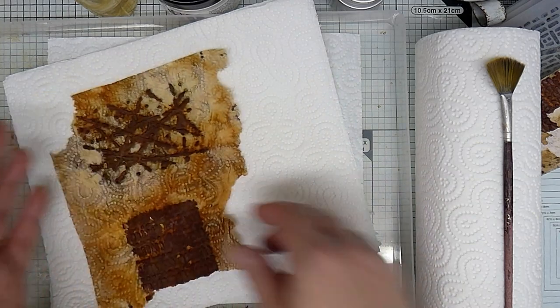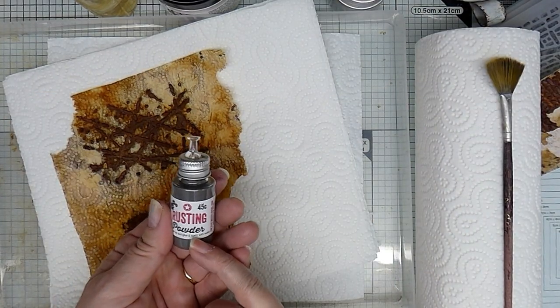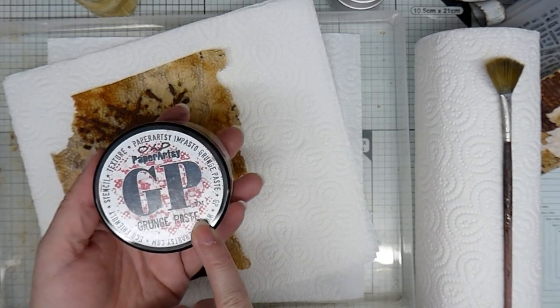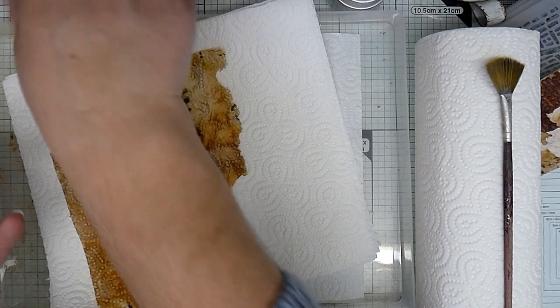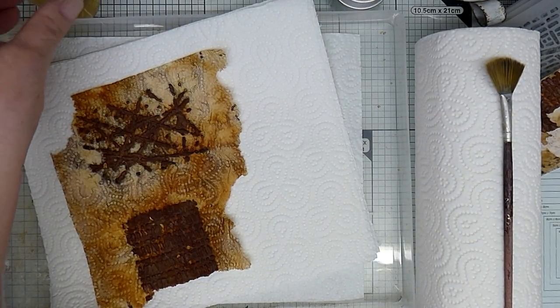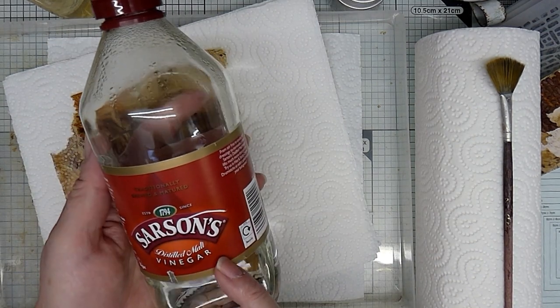I've used various things. I've used Paperartsy rusting powder, Paperartsy grunge paste, white vinegar, which is Sarson's distilled malt vinegar.